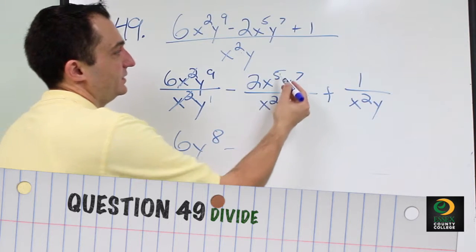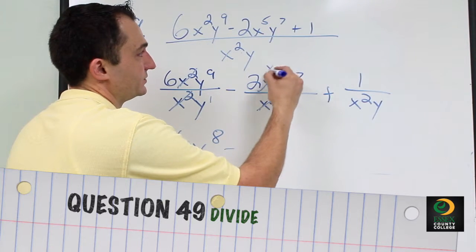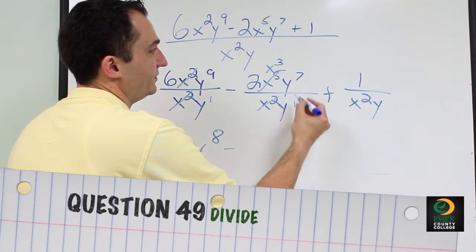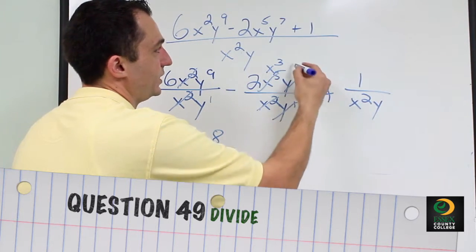Same thing here: 5 minus 2 gives us an x3, and then 7 minus 1 gives us a y to the 6th.